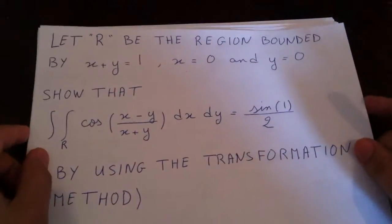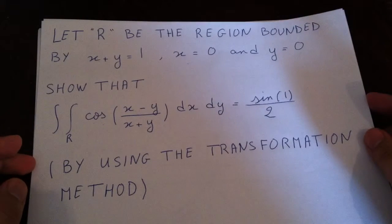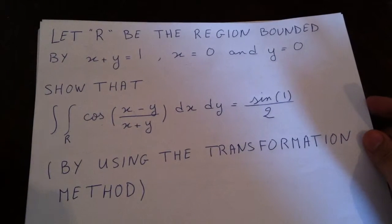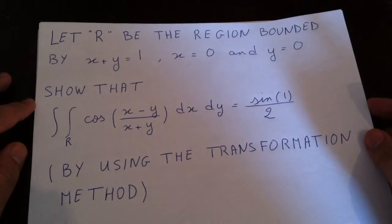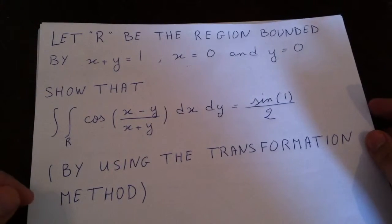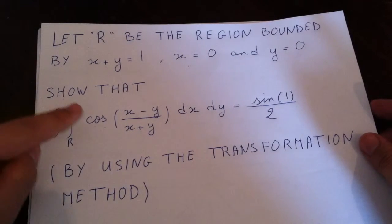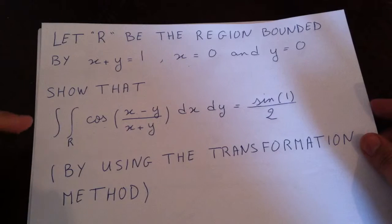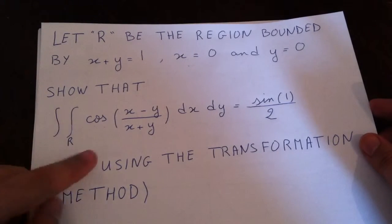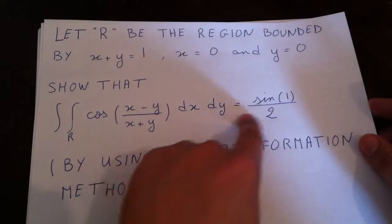Hello again, it's me. Thank you for watching the first part. I'm going to do the second part. For people that didn't watch the first part, please check it. I'm just quickly saying the question here. So let R be the region bounded by x plus y is equal to 1, x is equal to 0, and y is equal to 0, and show using the transformation method that this double integral is equal to that.